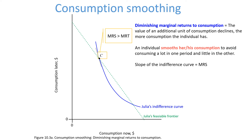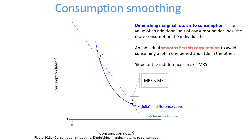Let's take another point to the right: point E. At E, the marginal rate of substitution is low. In this case, Julia consumes a lot now but not much later. Thus, diminishing marginal returns imply that she would like to move some consumption to later.